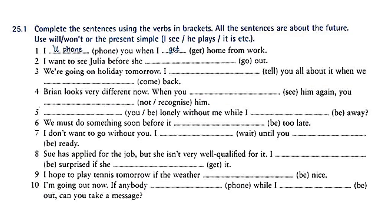Exercise one: complete the sentences using the verbs in brackets. All sentences are about the future — use 'will' or the present simple. Number one is done for you: 'I'll phone you when I get home' — 'when I get,' not 'when I will get,' although it refers to the future. Number two: 'I want to see Georgia before she goes out' — not 'she will go out.'